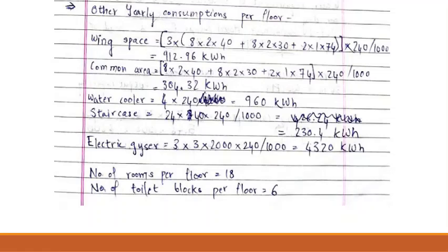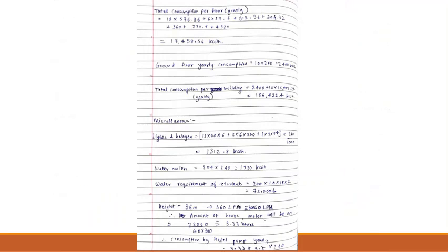Now we have that the number of rooms per floor is equal to 18 and the number of toilets per floor is equal to 6. Adding all the values, we have the total consumption per floor that is equal to 17,458.56 kilowatt hours.